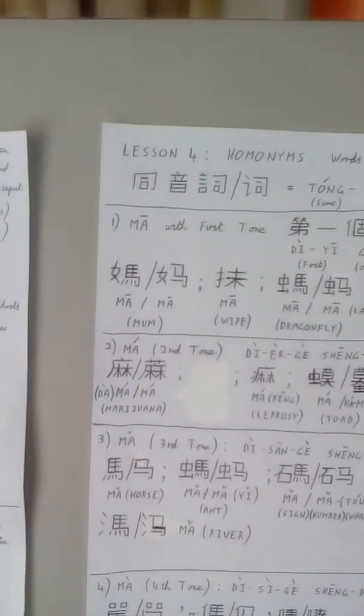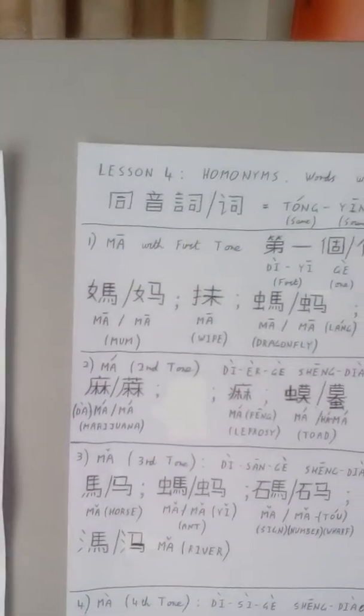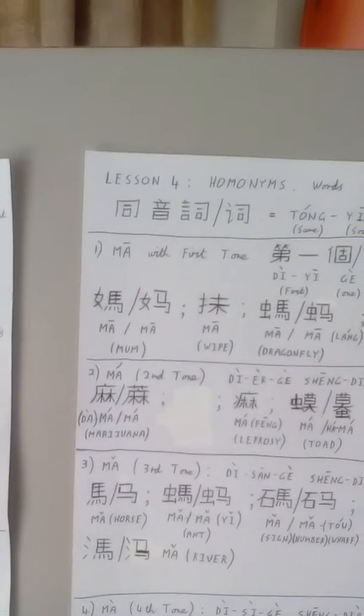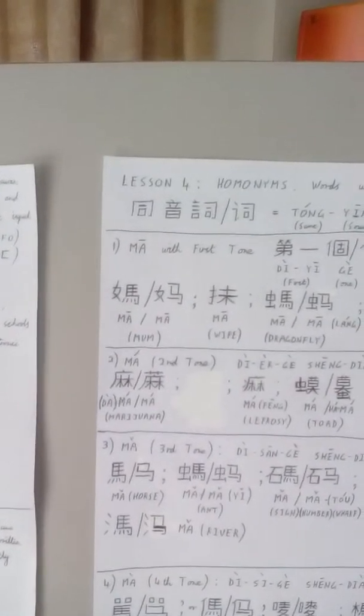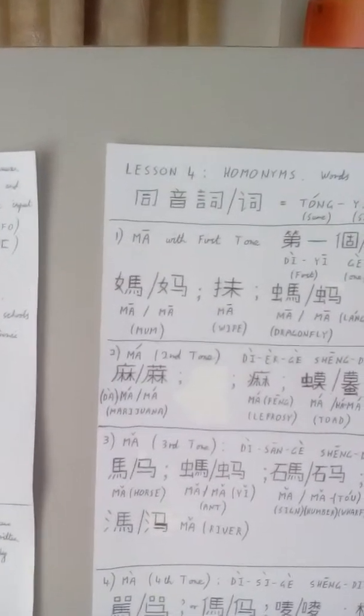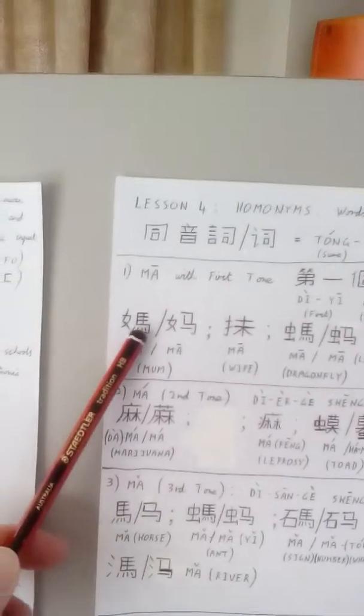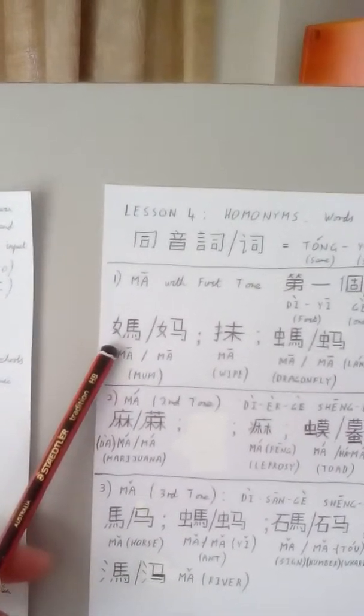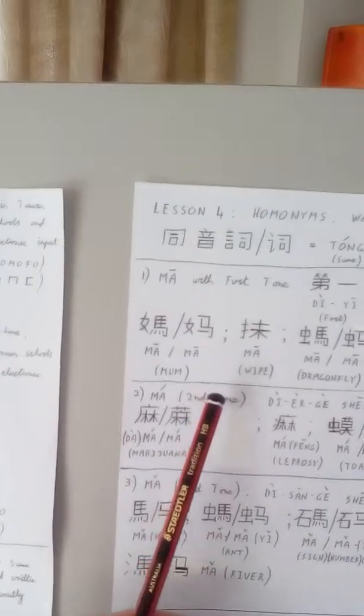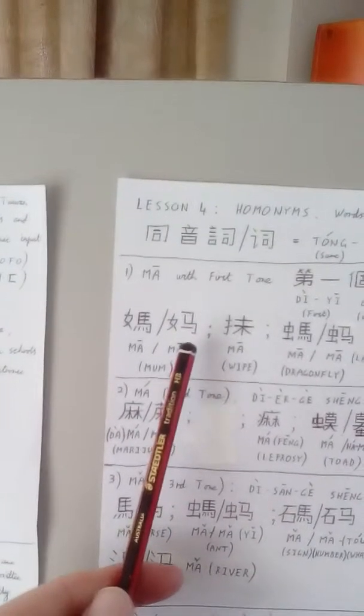For example, 马 with the first tone, 第一个声调的马. One example is 妈妈, mother or mum. It can be written as a traditional character here, 繁体字的妈, and the simplified 简体字的妈.